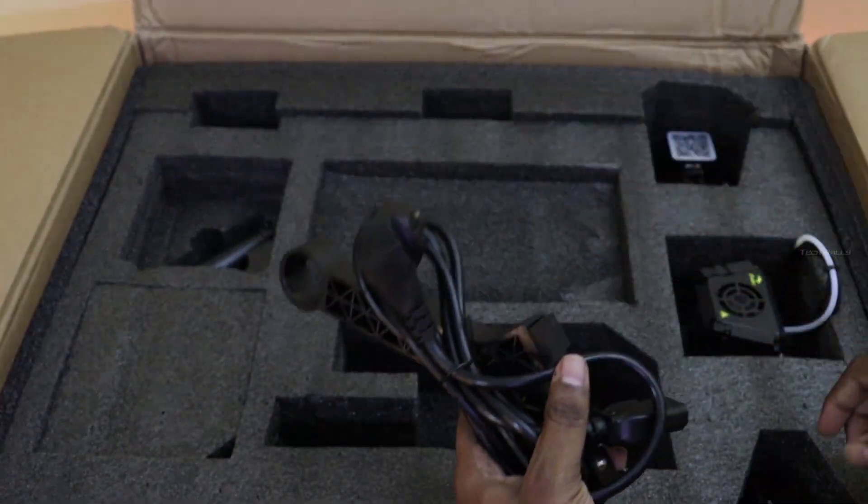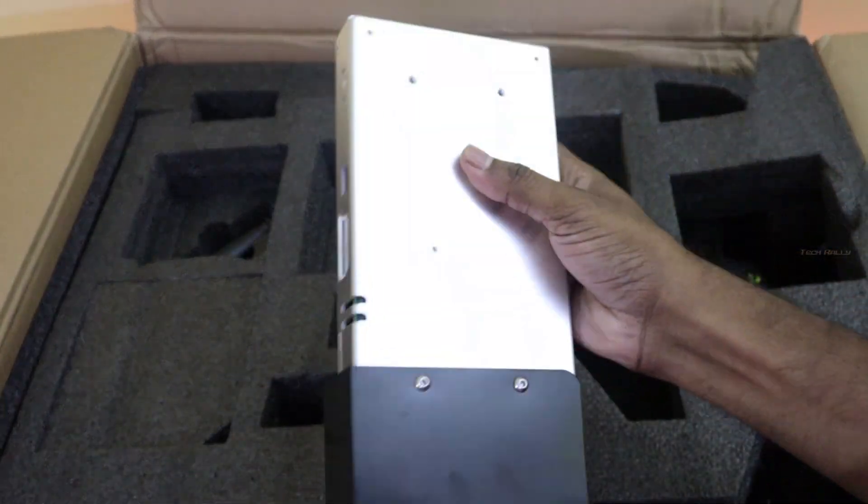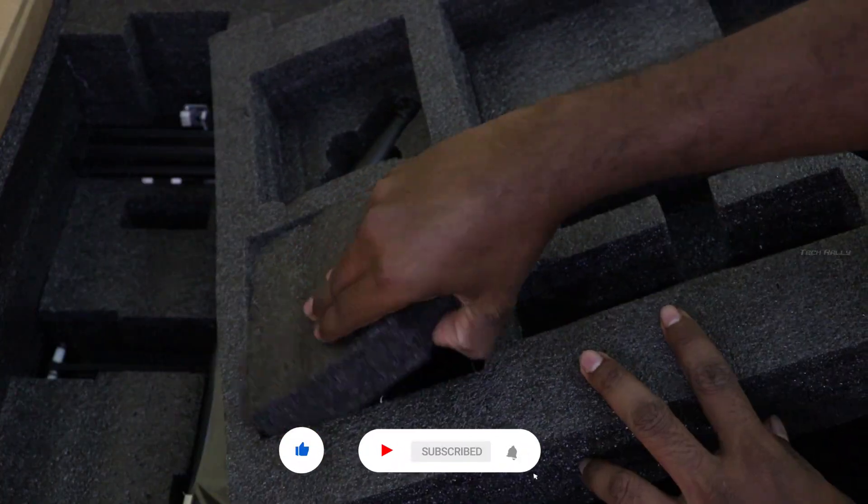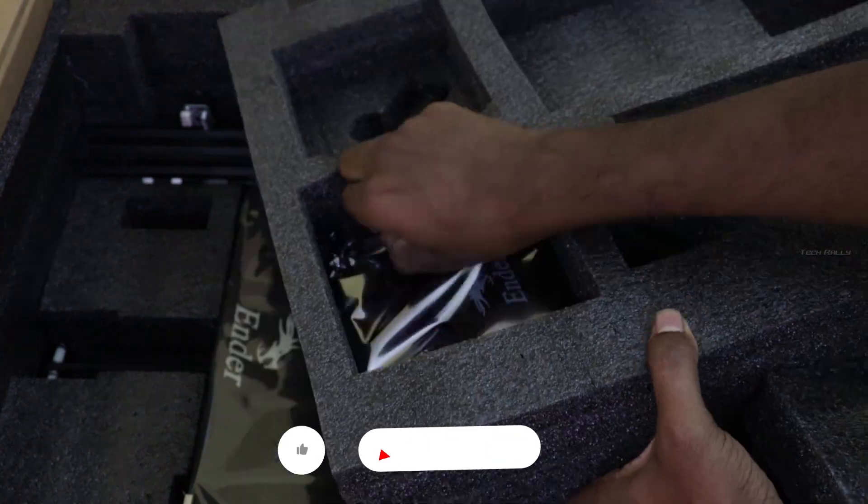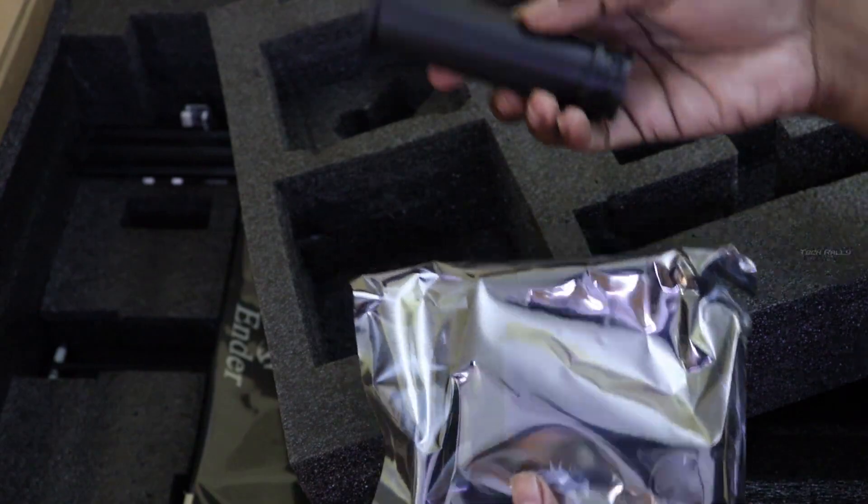Inside the box, we have some test filaments, tools, user manuals, and it also comes with the manual power supply. It comes with the basic LCD display and the plastic filament spool holder.